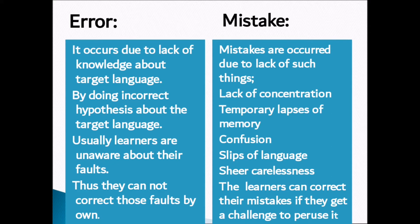Mistakes happen due to temporary lapses of memory — when you are in depression or frustration, you forget things and make mistakes. They also occur because you don't feel confident; when you are not confident, you become double-minded and confused, leading to mistakes and slips of language.